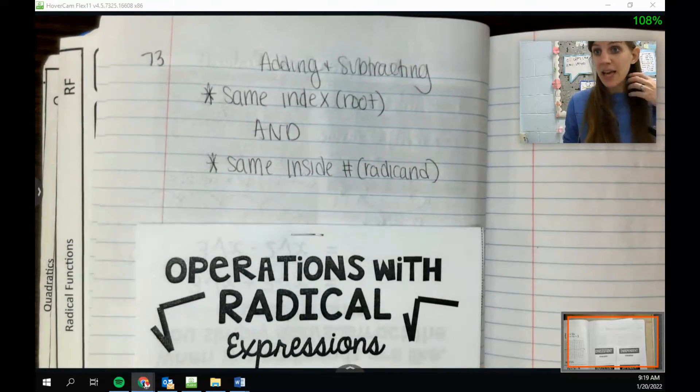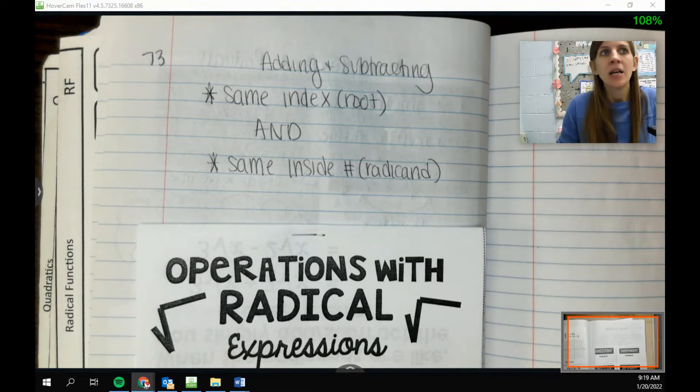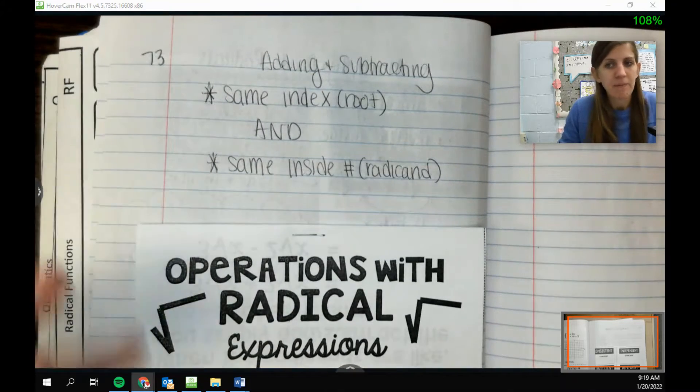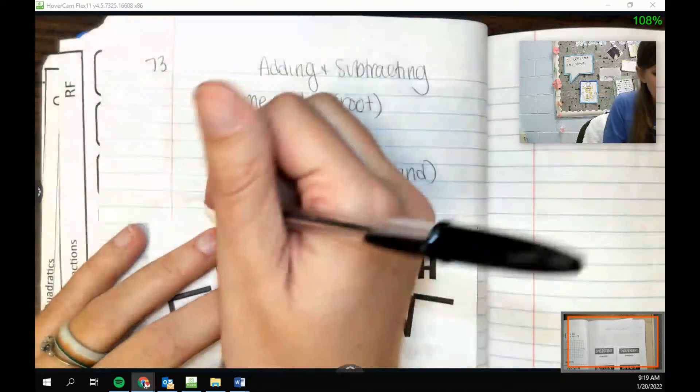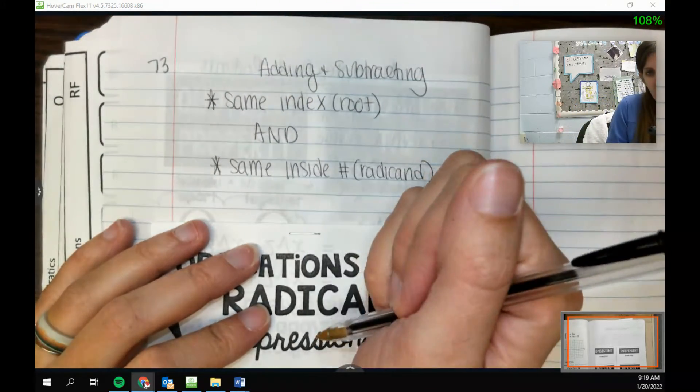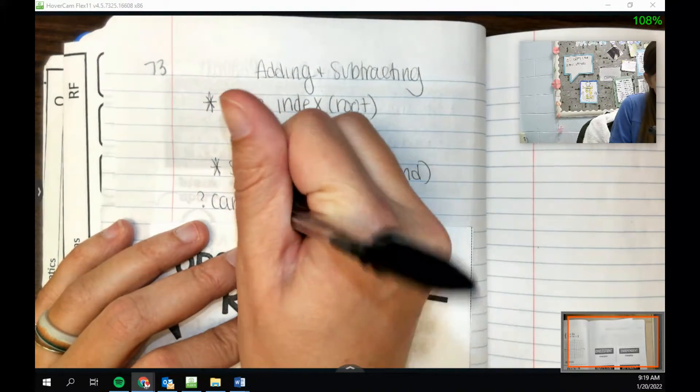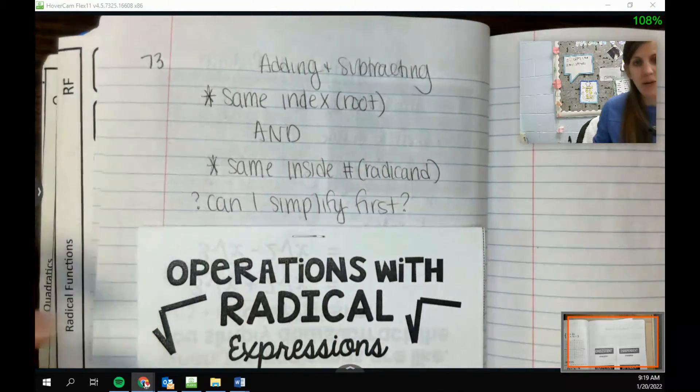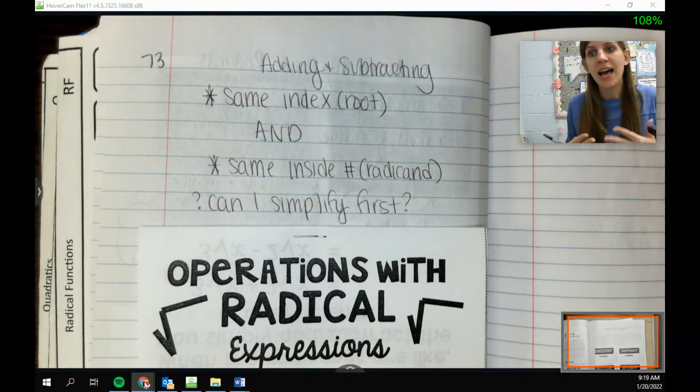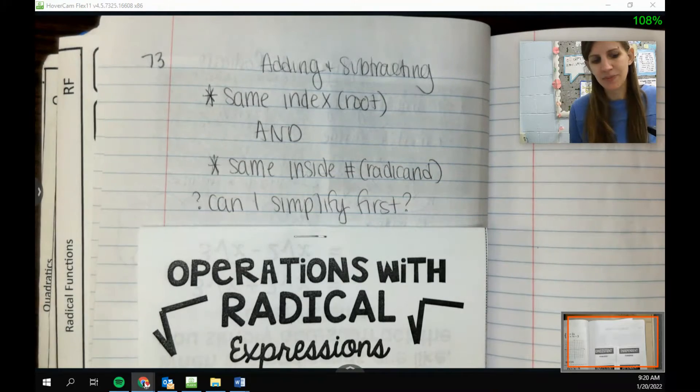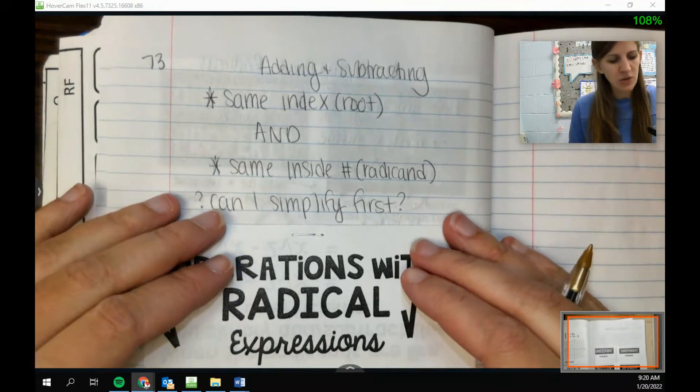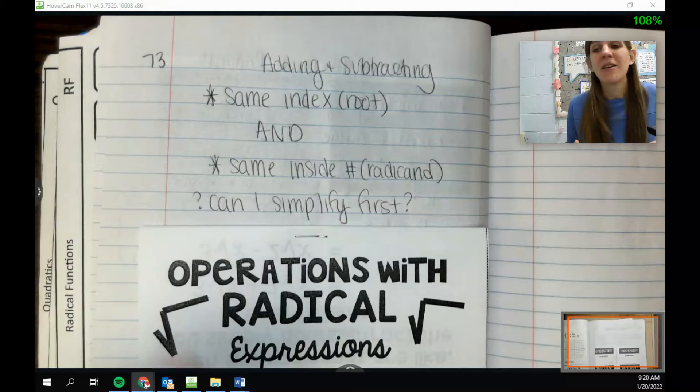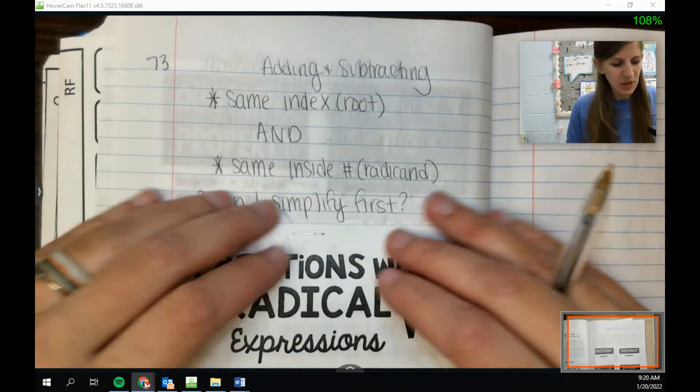That might seem really hard to do. But you're not off the hook if it doesn't work out this way. We always have to be careful to see if I can simplify first. So if you don't have the same index, same inside number, you really should be asking yourself, can I simplify first? We always want to be dealing with the simplest radical. It's a little bit more restrictive, which is good and bad.